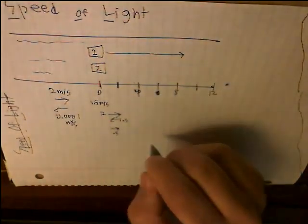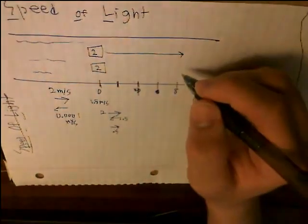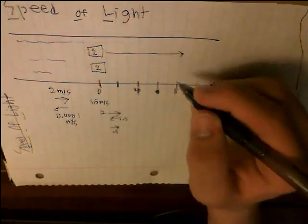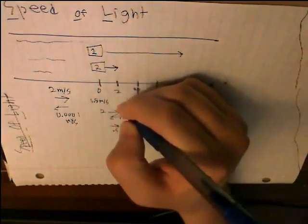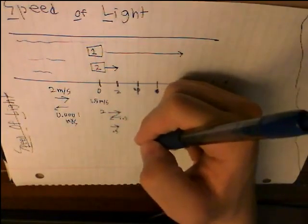So in this case, it takes 4 seconds for person 1 to get to 8. But in those same 4 seconds, you only get to 2. So you've traveled 2 years through time.